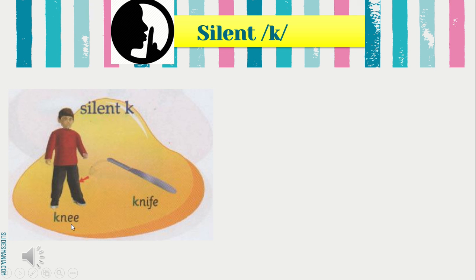Here we have the word 'knee'. Bunyi K ialah 'ke', but in this word we don't say 'knie' — we silent the sound of K. K tidak berbunyi. We only say 'knee'. This one — 'knife'. We don't say 'knaife', we say 'knife'.